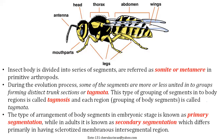The arrangement of segments in the embryonic stage — when the egg is incubating and the larva is developing inside — shows a few segments which can be seen; that is called primary segmentation. Whereas in adults, the number of segments is clear and will never change, and that kind of arrangement is called secondary segmentation.